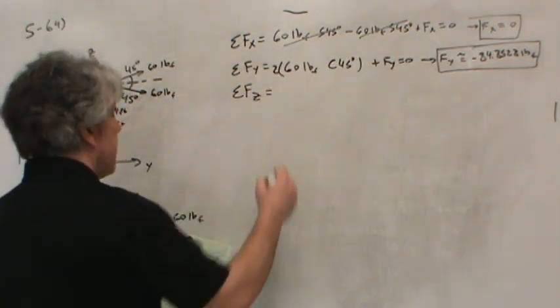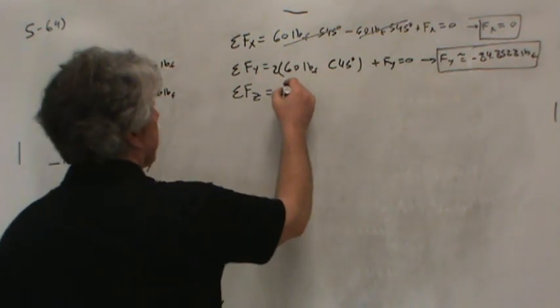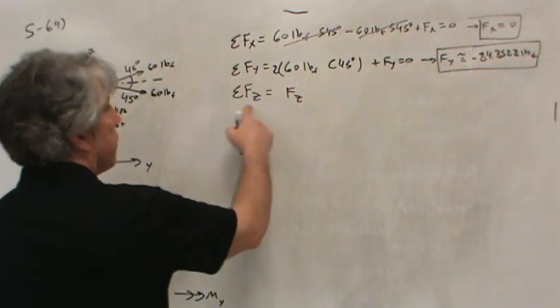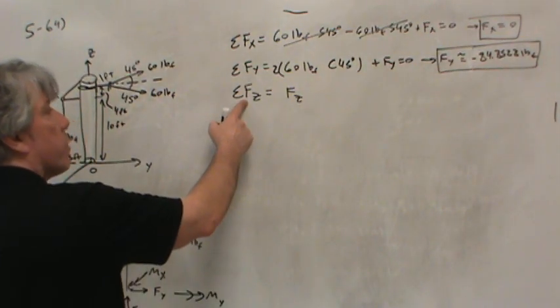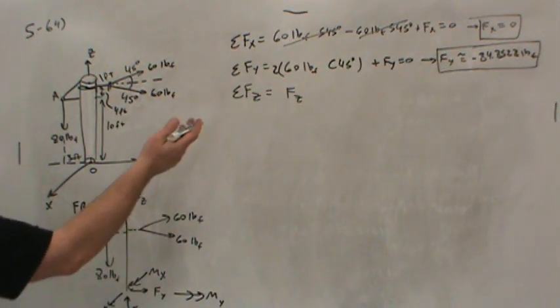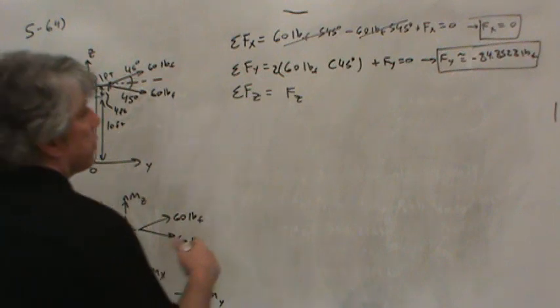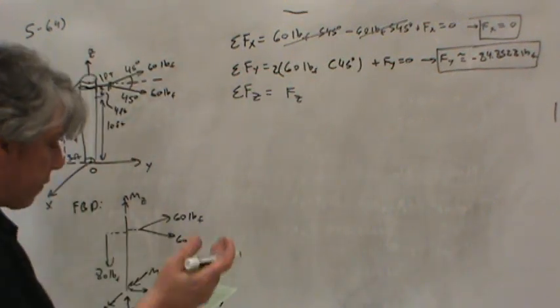The sum of forces in the Z direction. Well, in the Z direction, we've got Fz, the reaction at the ground. Don't get confused. This is the sum of forces in the Z direction. This is the force at Z. Maybe I should have called this Oz, for example. Maybe that would get rid of the confusion. But I've started with F, so we'll leave it.